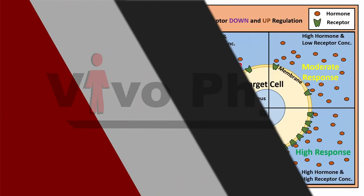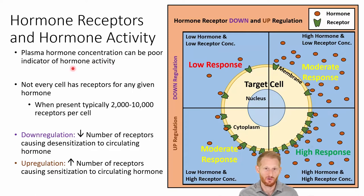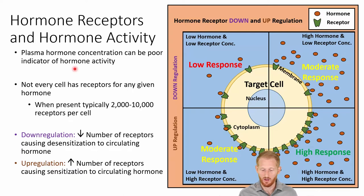Besides just the amount of hormone being released into the blood, we also have another means of regulating the actions of the endocrine system and the hormones it releases. If you were to look at just hormone concentration in the blood, it's oftentimes a poor indicator of the actual hormone activity. The reason for this is that hormones have to bind to a receptor, and the number of receptors on a cell can change.